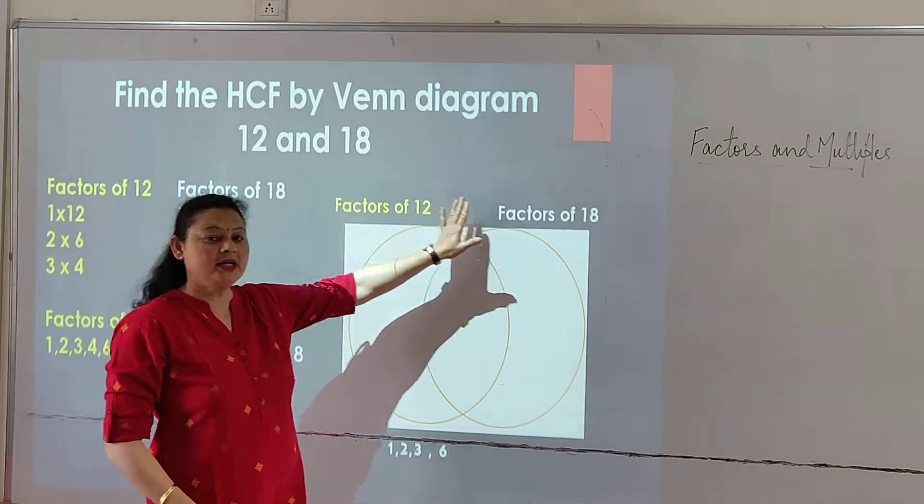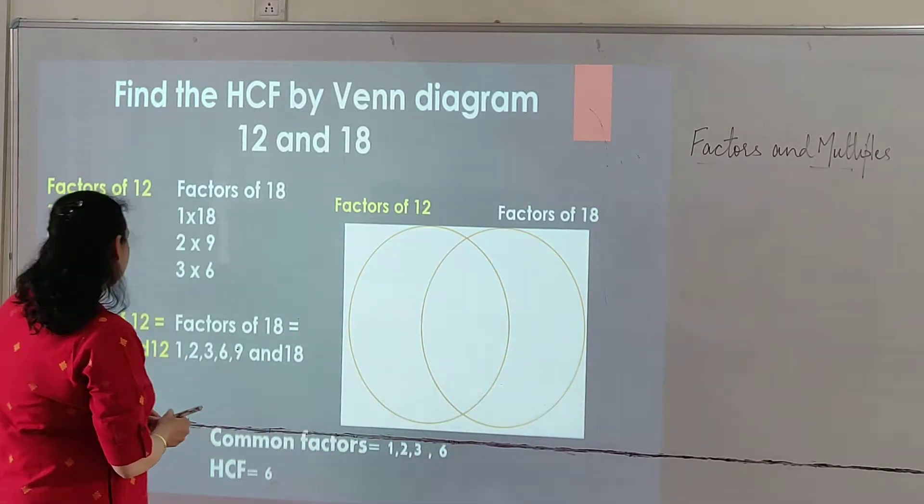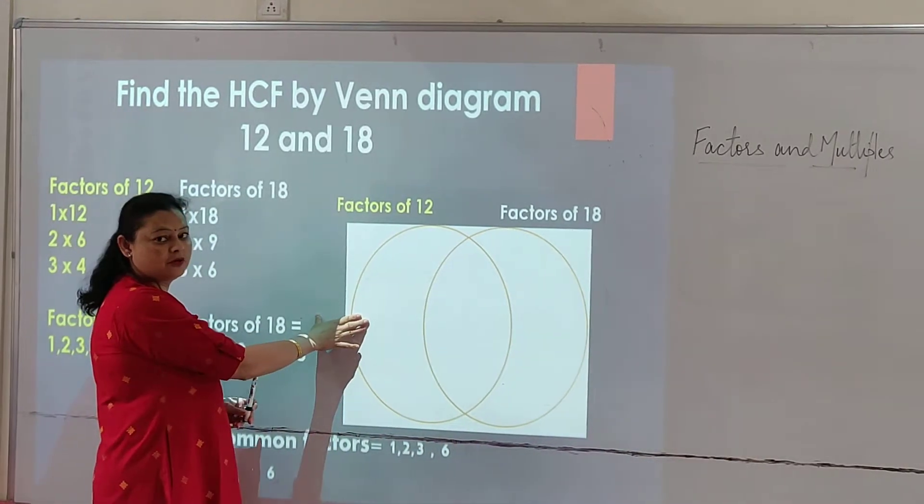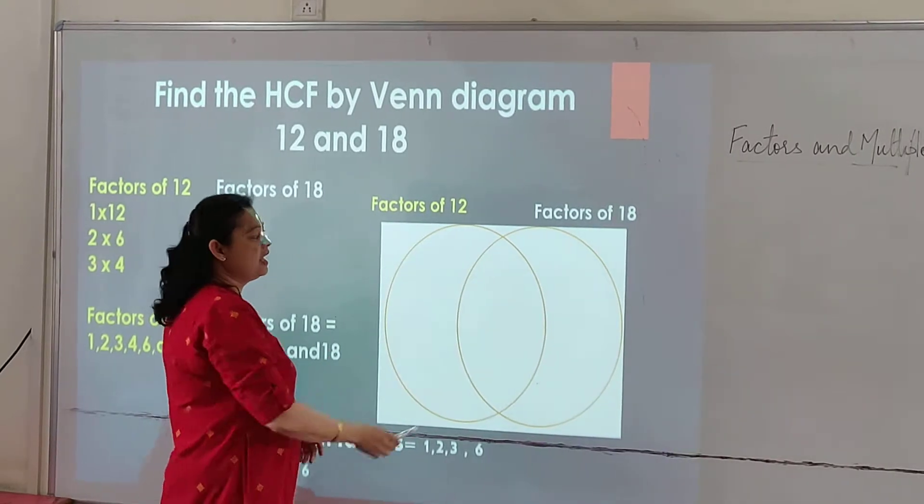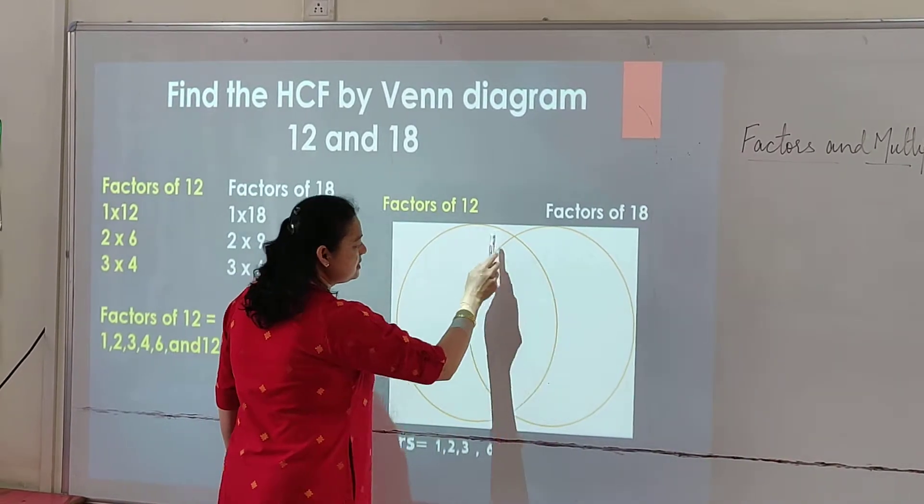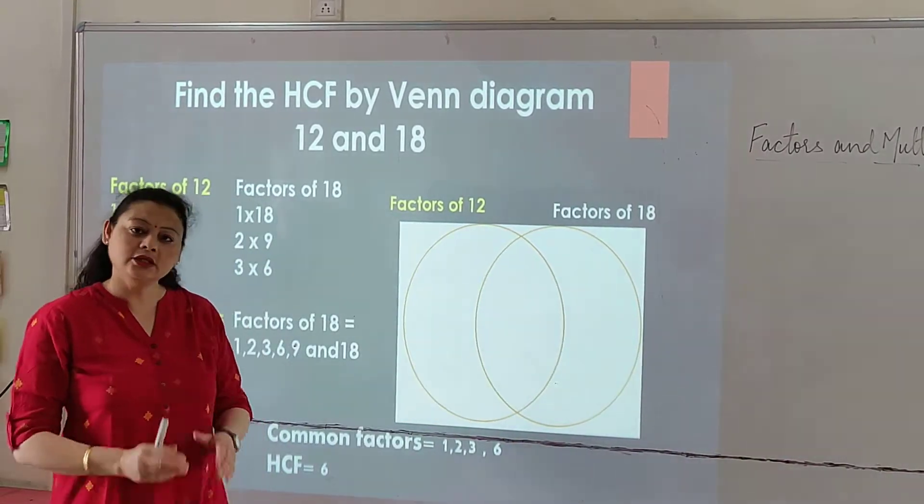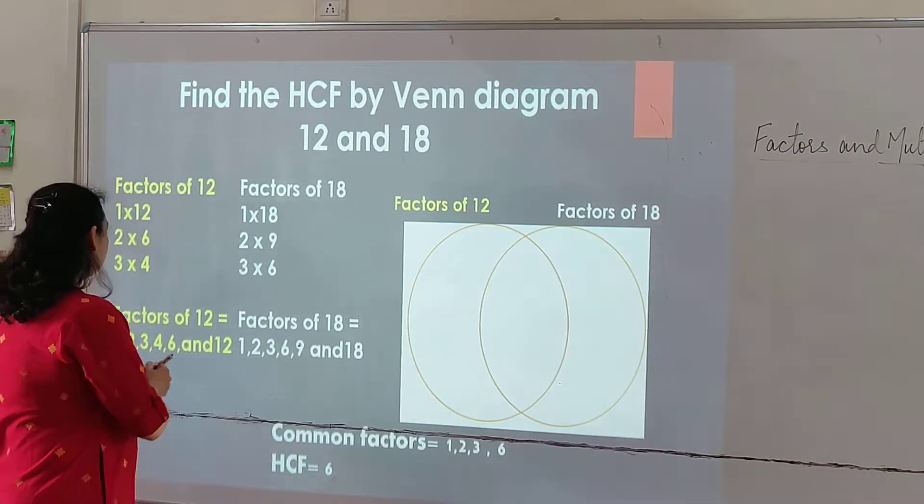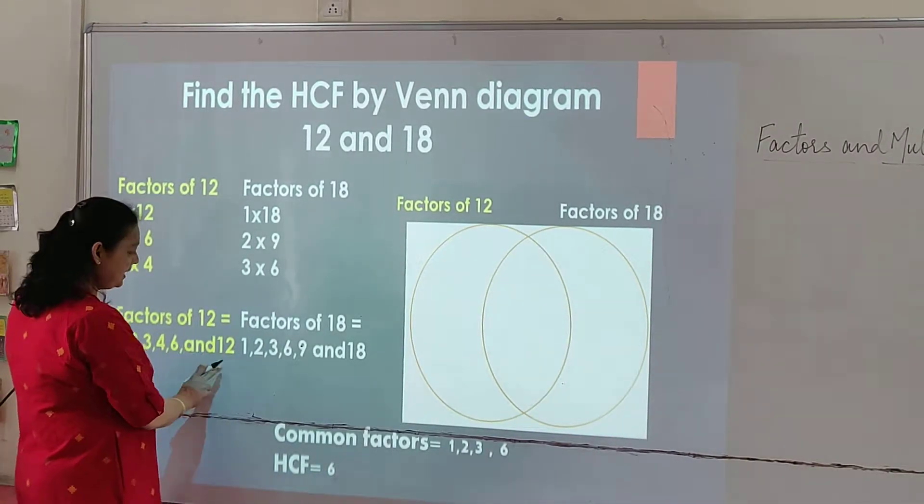Now we will draw a Venn diagram here. On one side we will mention the factors of 12, and on the other side factors of 18. And in the centre part, we have to write the common factors.